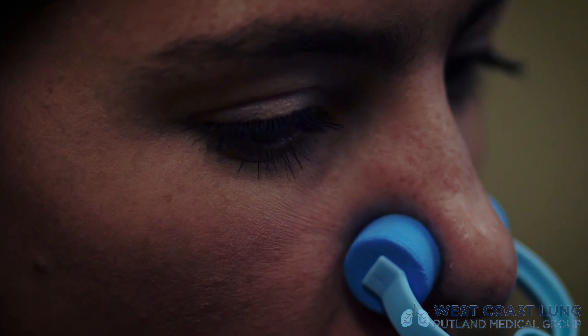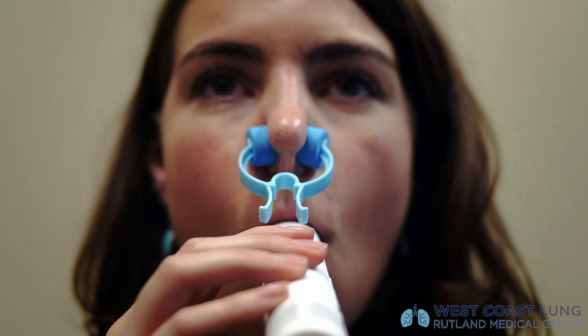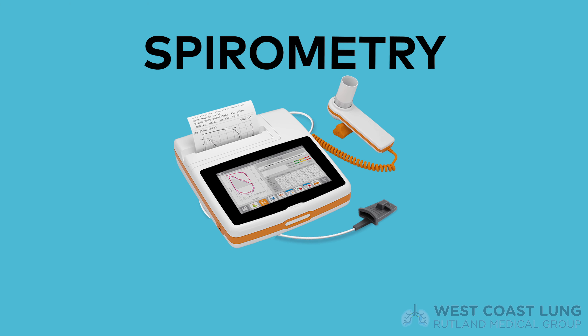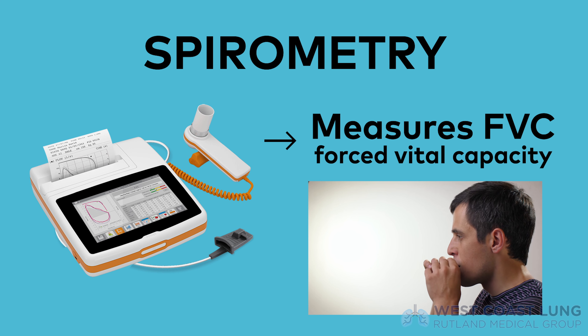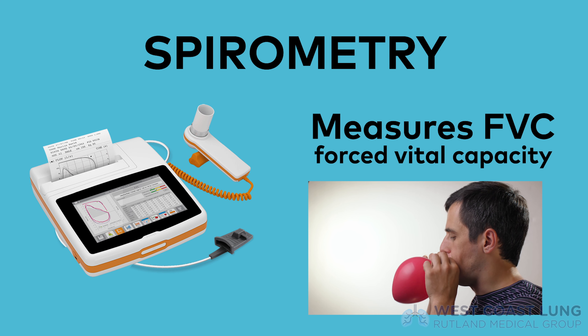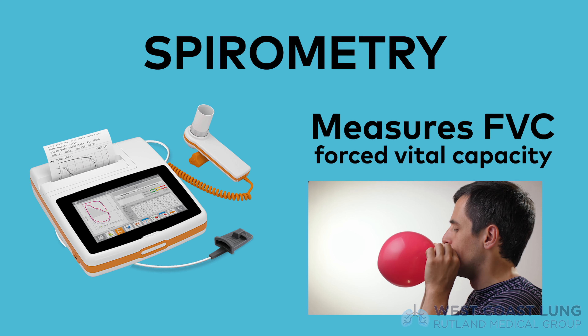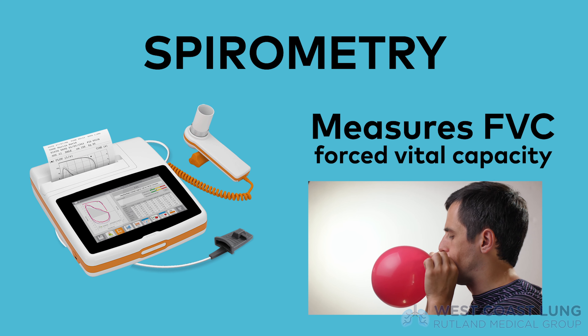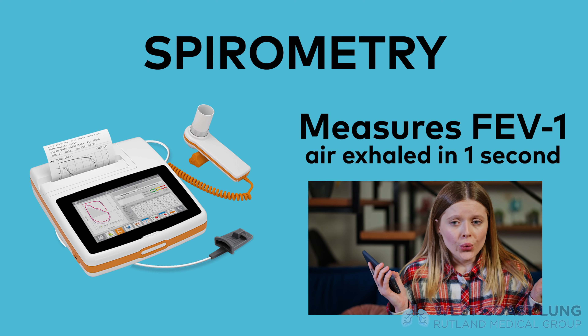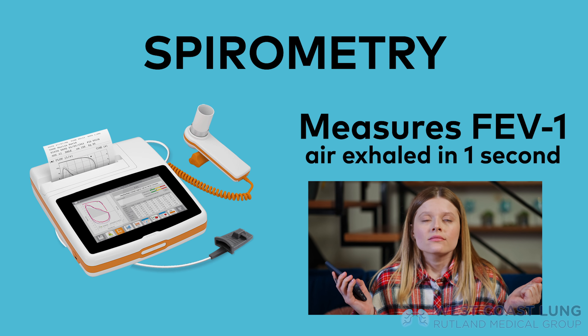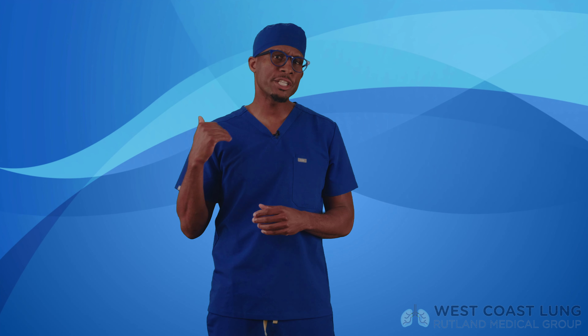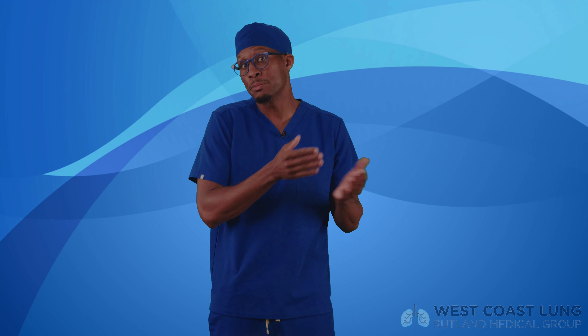One test is a pulmonary function test, or spirometry. The difference between a full pulmonary function test and spirometry is pretty simple. Spirometry measures lung volumes — force vital capacity, which is the amount of air that can be forcibly exhaled after taking a deep breath. Spirometry also measures FEV1, which is the amount of air forcibly exhaled in one second. The ratio of FEV1 to FVC tells us if your airway is obstructed.